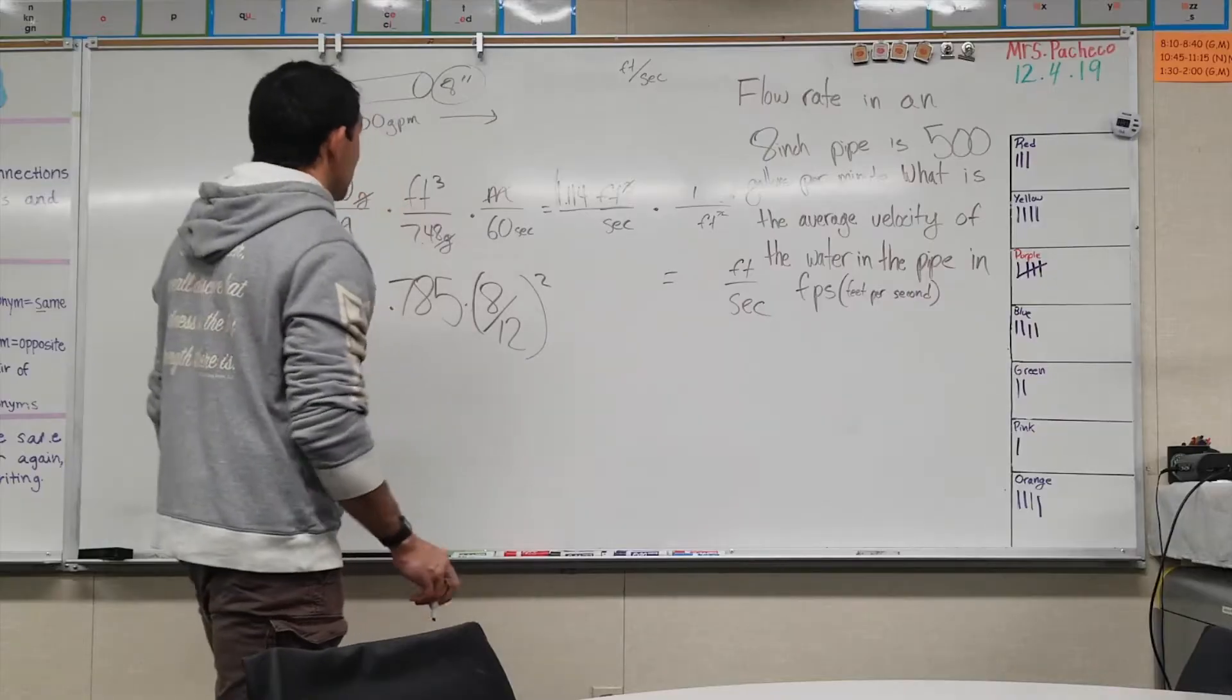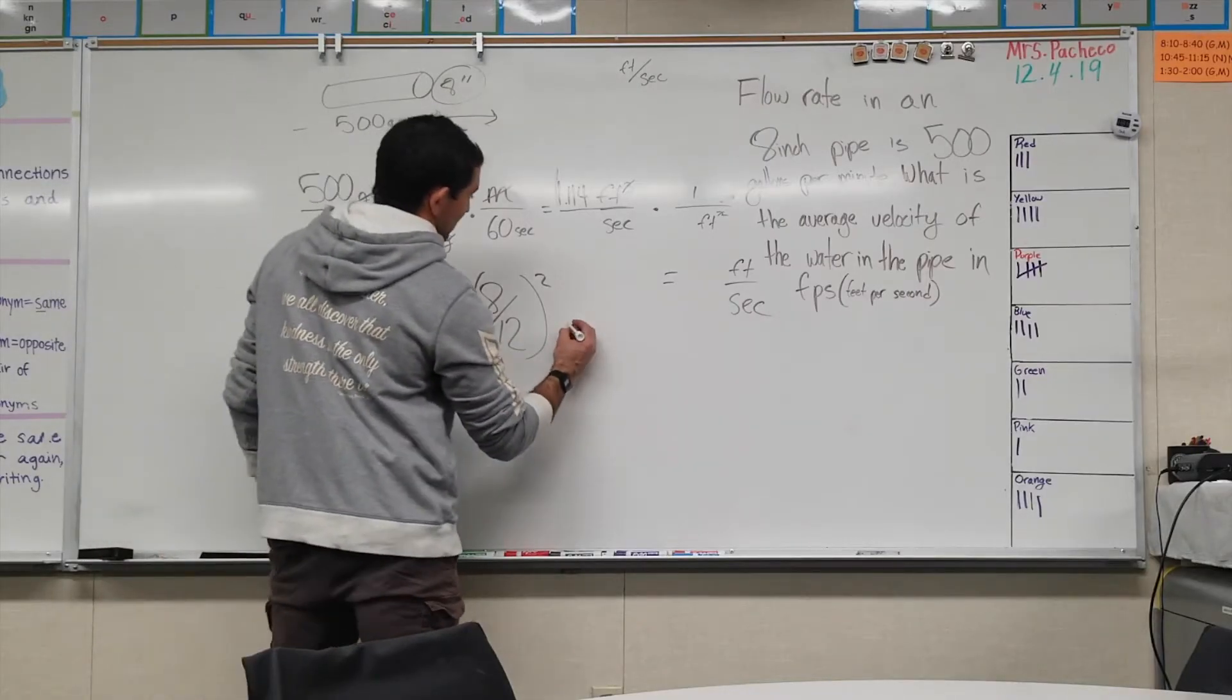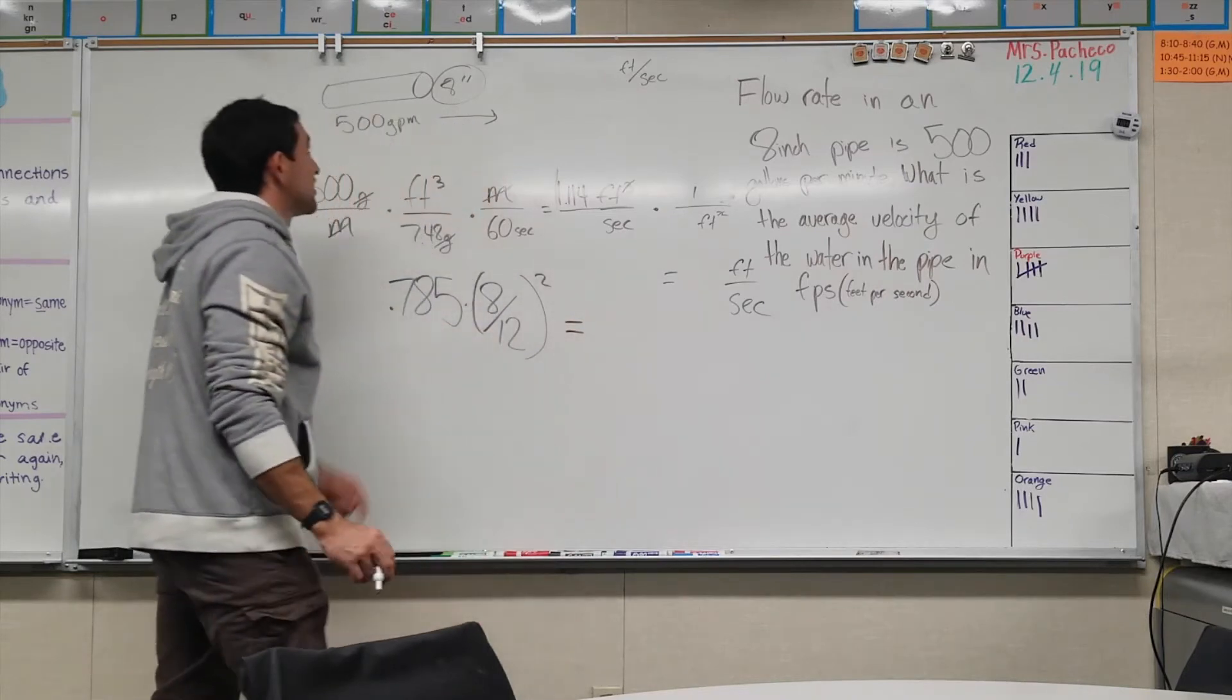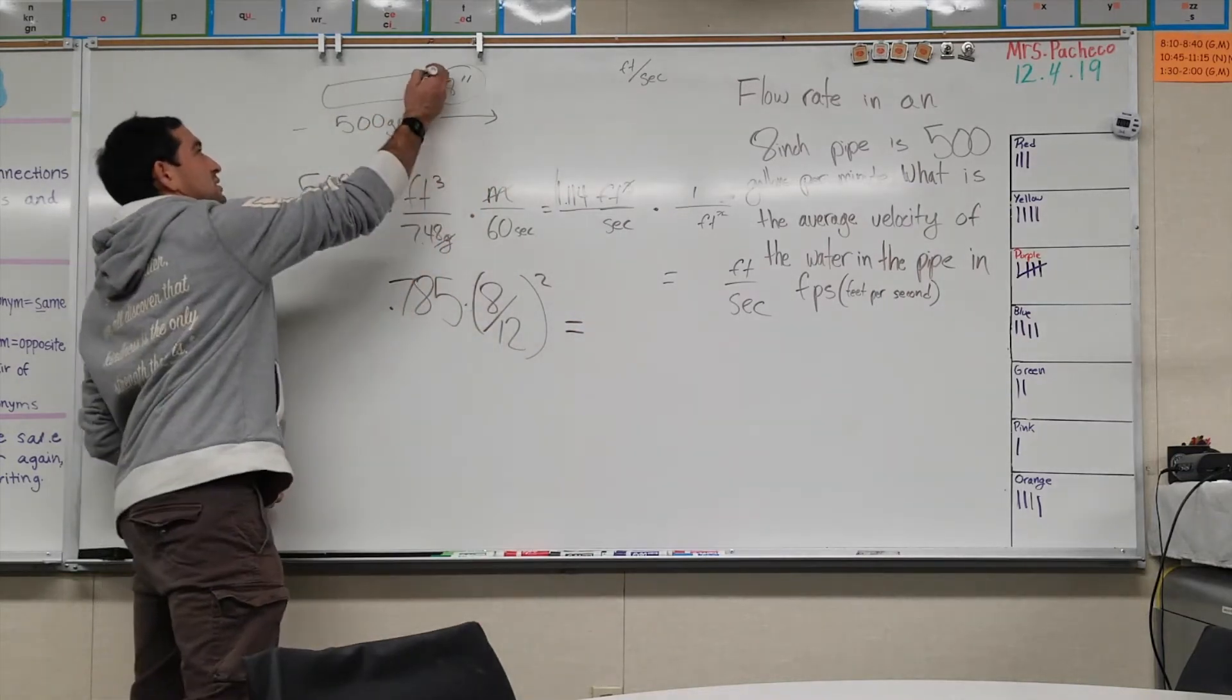You need to do 0.785 times a foot times a foot. It can't be inches, that's a law of math. And that will give you the surface area of just this circle.